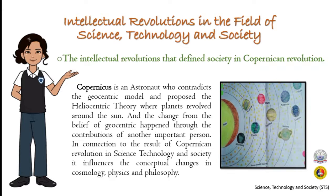In the Copernican Revolution, in the sixth century, Ptolemy introduced the geocentric model showing that the Earth is the center of the universe, which was widely accepted at the time. Copernicus was an astronomer who contradicted the geocentric model and proposed the heliocentric theory, where planets revolve around the sun. The shift from geocentric to heliocentric belief was driven by the contributions of many important persons, and the Copernican Revolution influenced conceptual changes in cosmology, religion, physics, and philosophy.